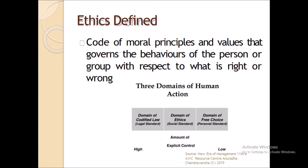Ethics are known as the code of moral principles and values that govern the behavior of a person or group with respect to what is right or wrong. There are three domains of human actions in ethics: the domain of codified law, the domain of ethics, and the domain of free choice. The amount of explicit control over human behavior is highest in the domain of codified law.